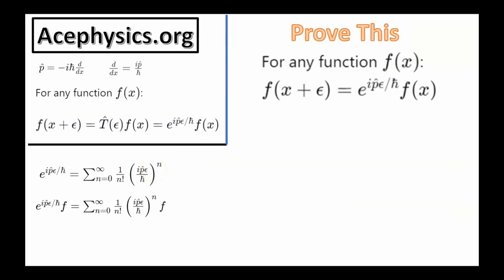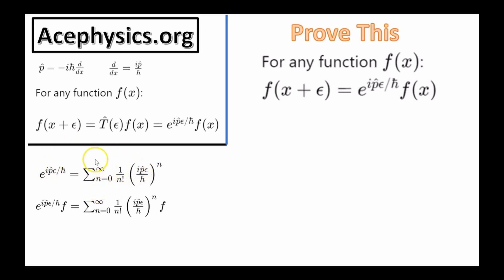On this slide, I'm going to prove that if you act the generator of position translation onto a function, it's equal to f of x plus epsilon. Any exponential can always be written in terms of the Taylor series sum — this is an identity. It's a sum from n equals 0 to infinity of 1 over n factorial of whatever is in the exponent to the nth power.